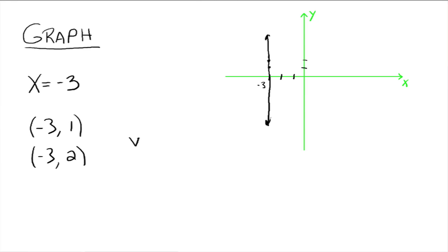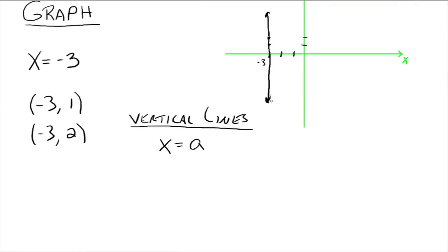So vertical lines have the form x equals some number, x equals a real number. The y is missing.